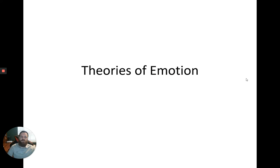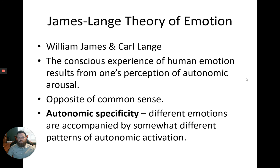The final topic is theories of emotion. There are four major theories of emotion if you include common sense, which is opposite of the James-Lange theory. Thanks to William James and Carl Lange, we have the James-Lange theory of emotion. The actual idea is that the conscious experience of human emotion results from your perception of autonomic arousal.